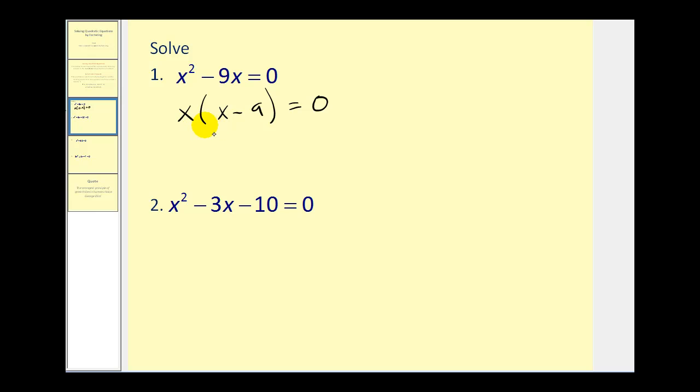And here's where the zero factor property comes into play. If we're multiplying these two together and their product is zero, then either the first factor must equal zero, meaning x equals zero, or the second factor of x minus nine must equal zero. So now we can just solve these two equations for x. This one's already solved for x, and this one, if we add nine to both sides, we'll have x equals nine.